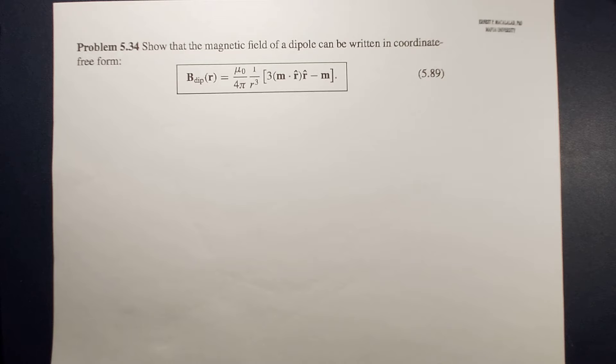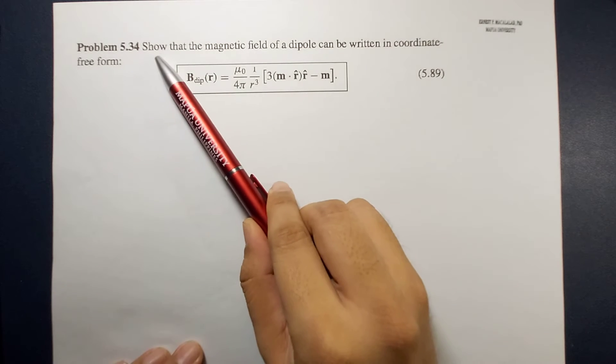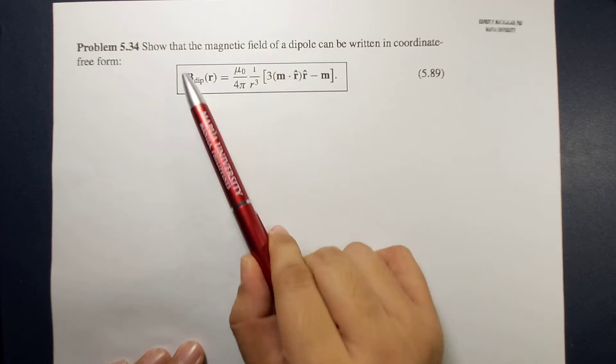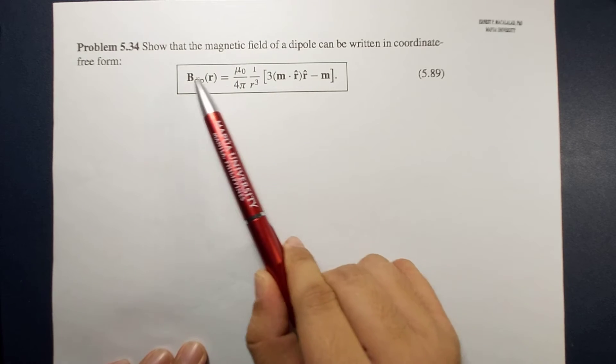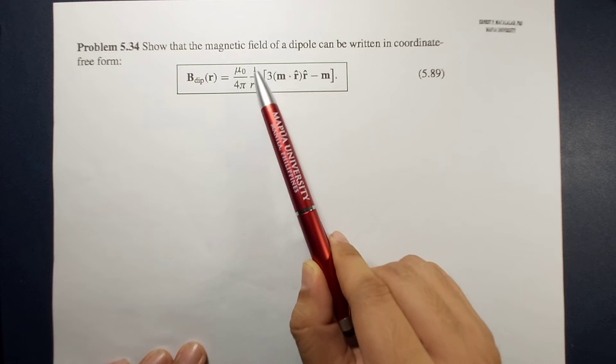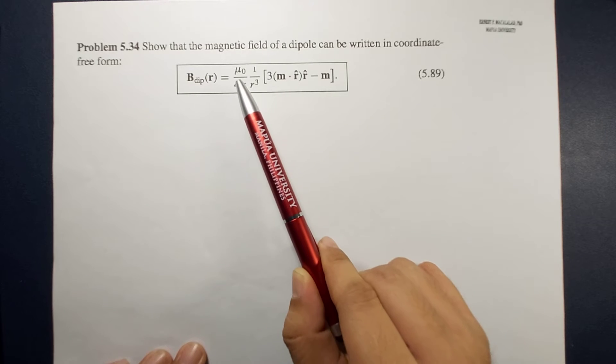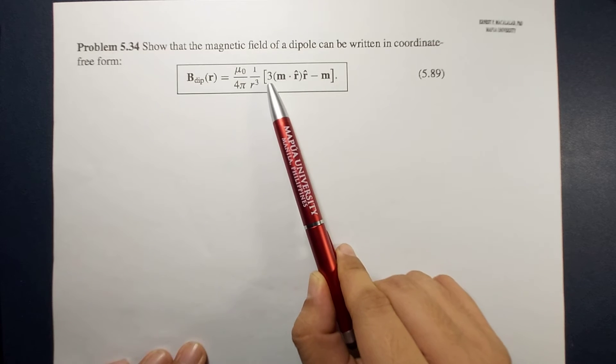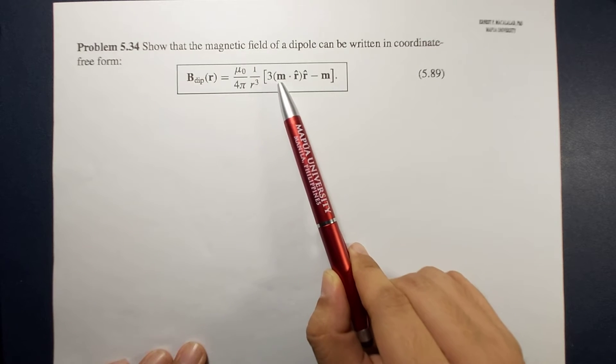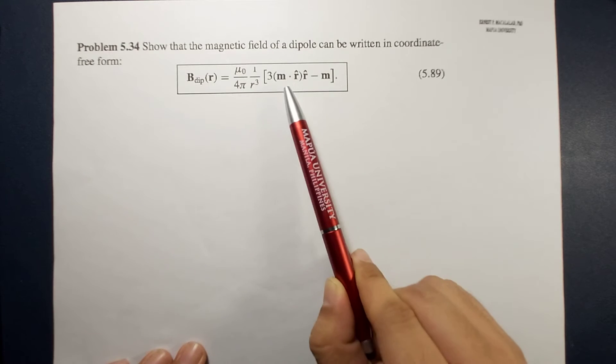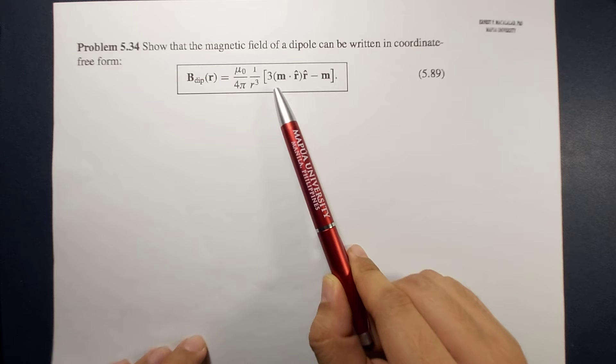The problem reads, show that the magnetic field of a dipole can be written in this coordinate-free form. So the magnetic field of a dipole as a function of r vector is equal to mu naught over 4 pi times 1 over r cubed times 3 times m dot r hat times r hat minus m, where m is your dipole moment.